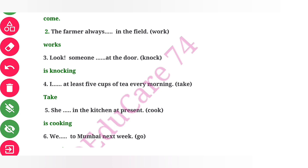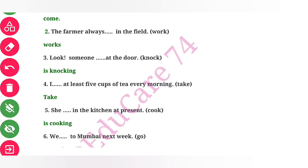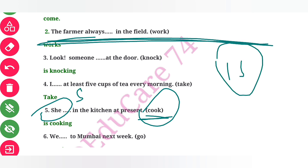Every morning is a regular action — it is a regular habit. With 'I' we use the base form of the verb, so it is 'take'. For another example, someone is cooking — it is a present continuous action, so the answer is 'is cooking'.